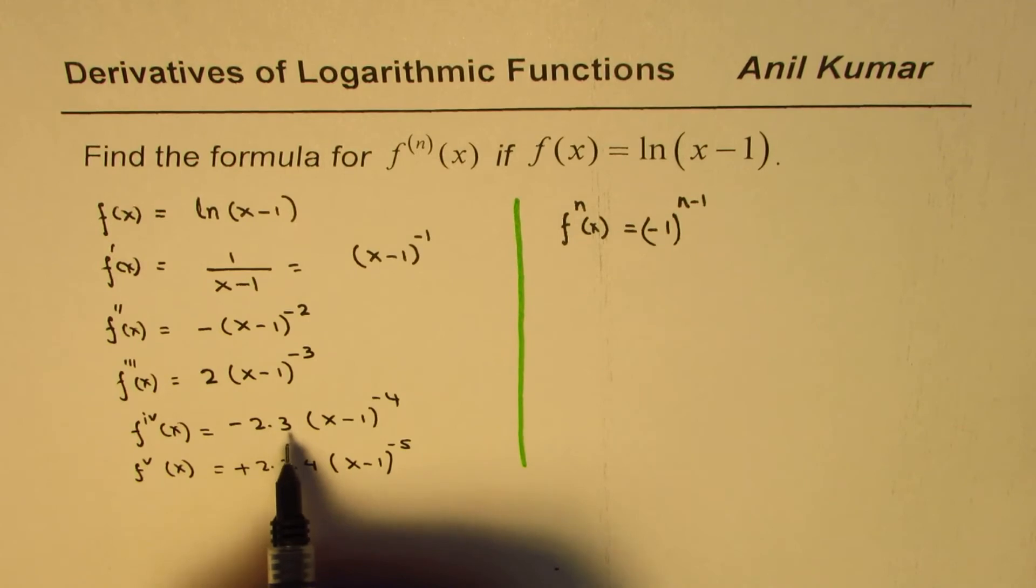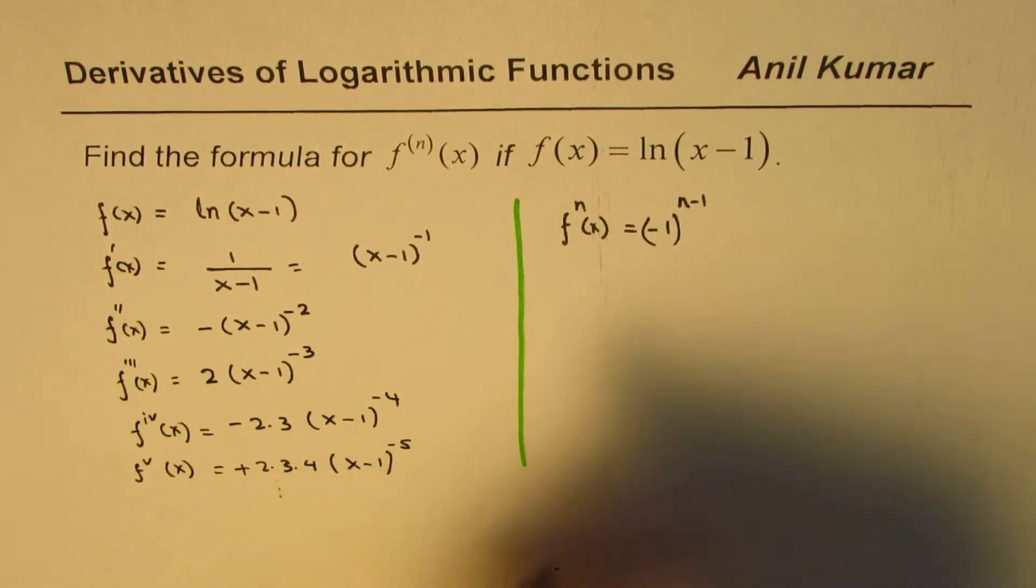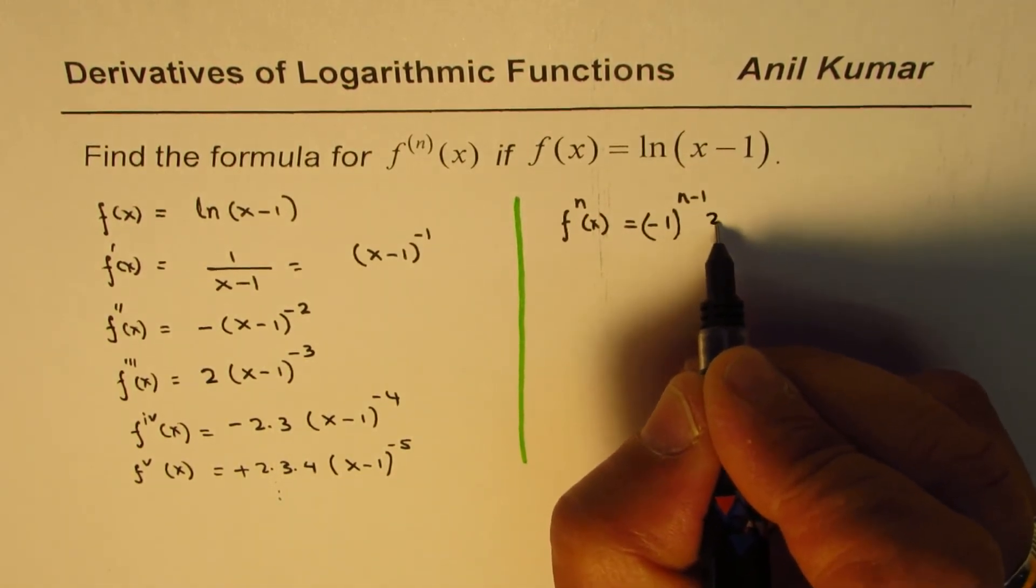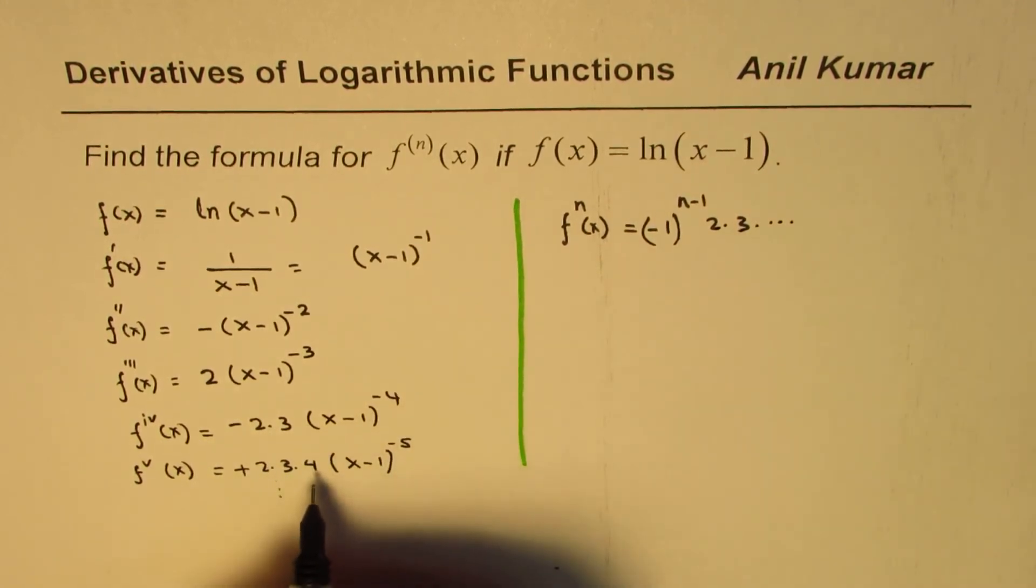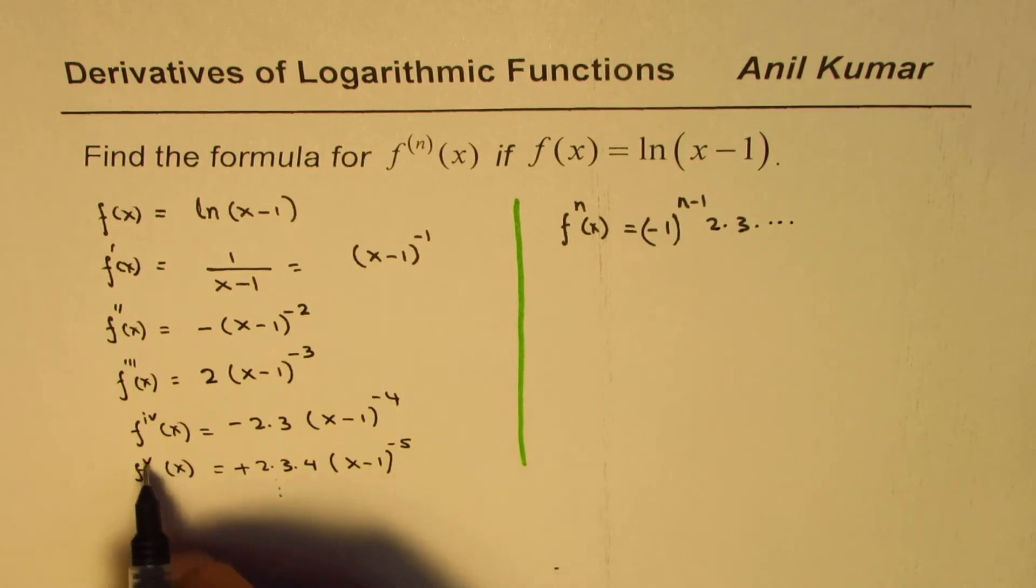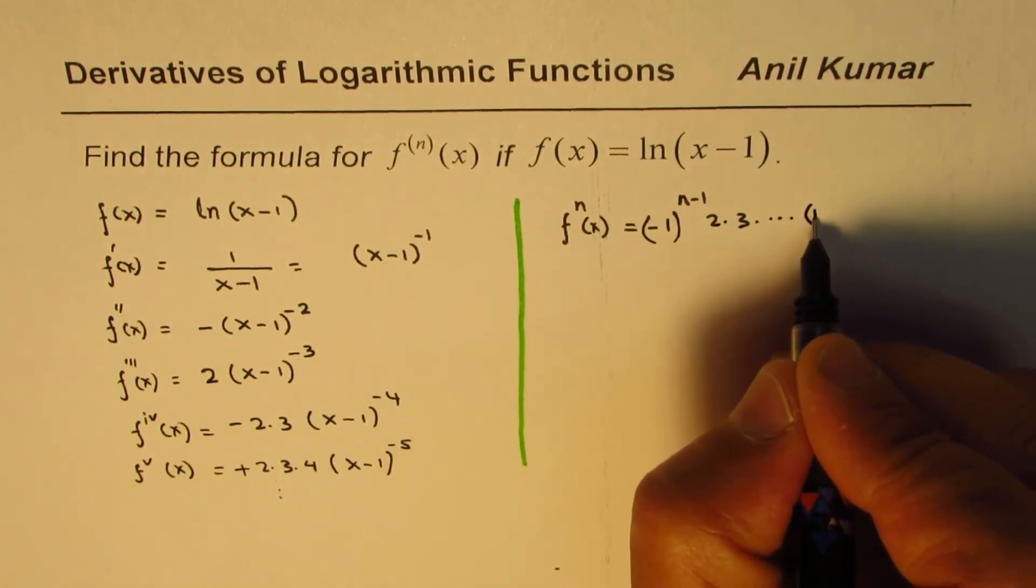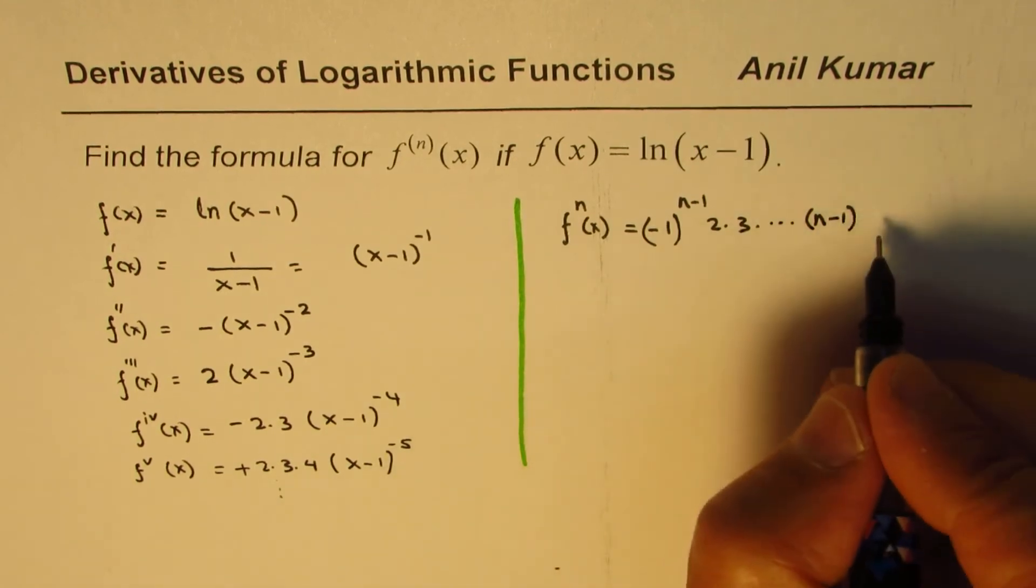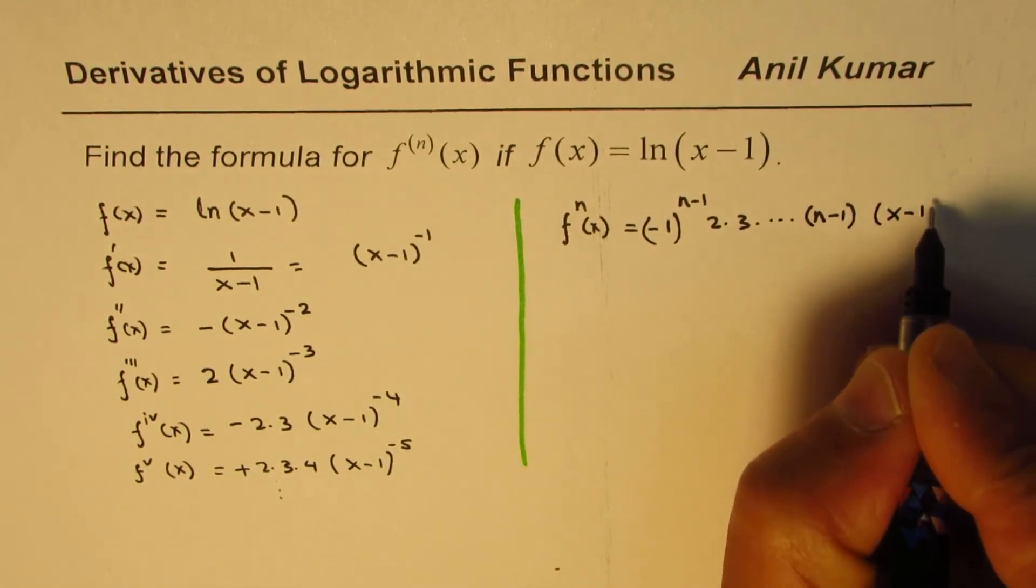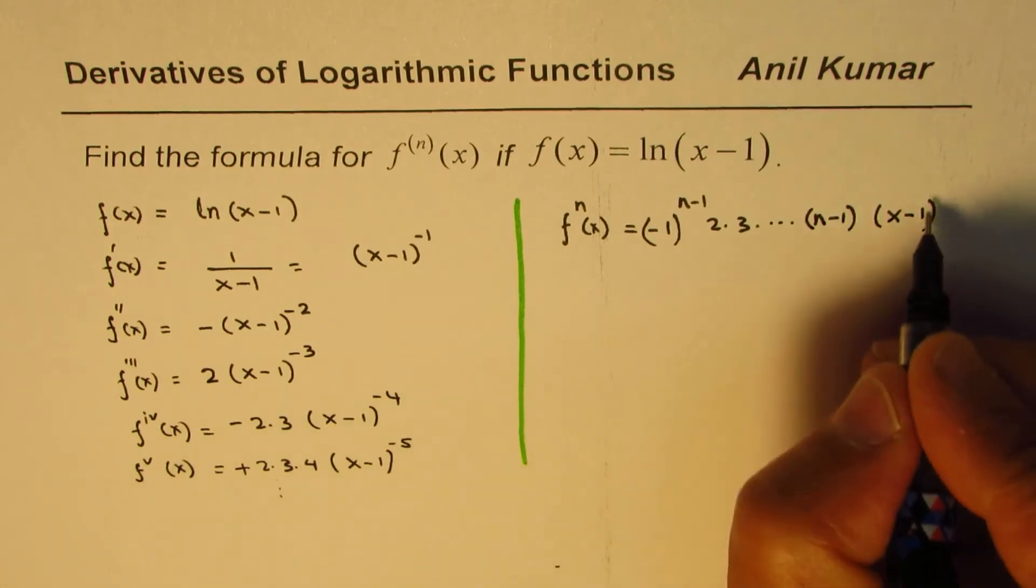And these numbers here are like 1, 2, 3, 4. So these numbers, you could write as 2 times 3 times and so on, till n minus 1. These are the numbers, and what we have here is (x-1) to the power of minus n.